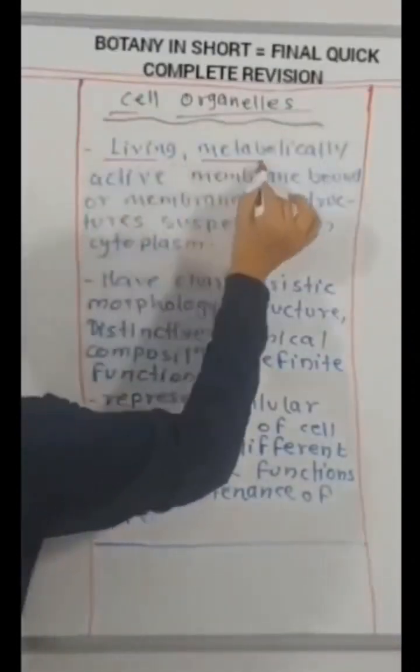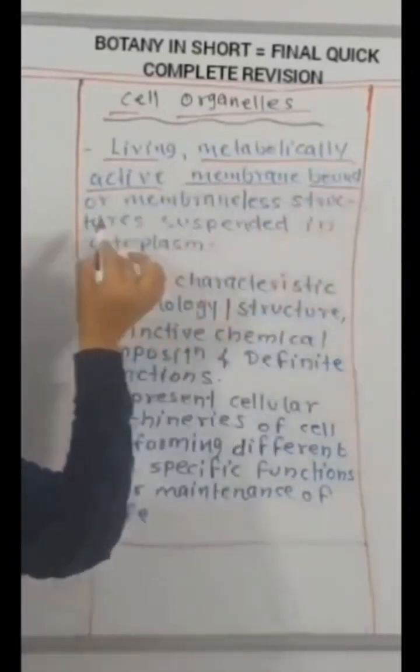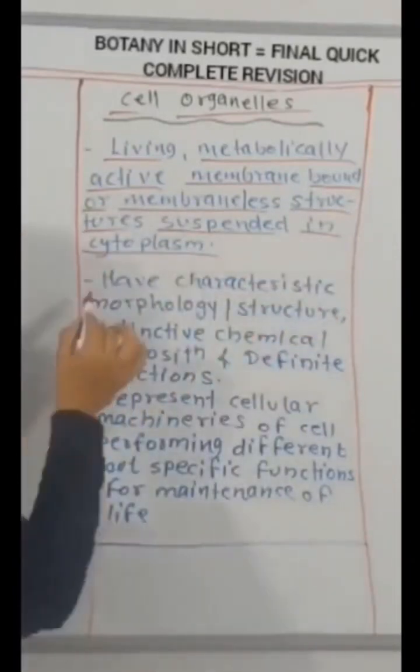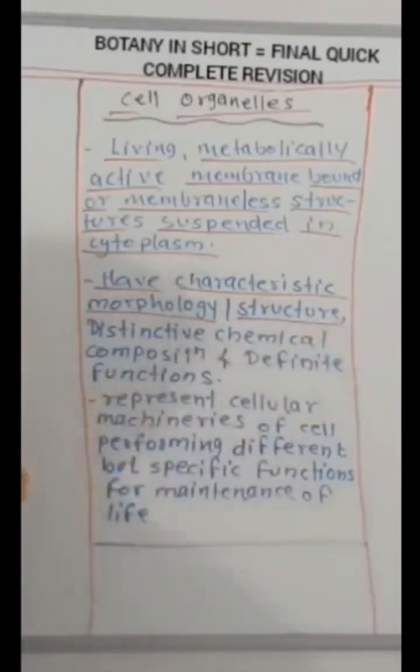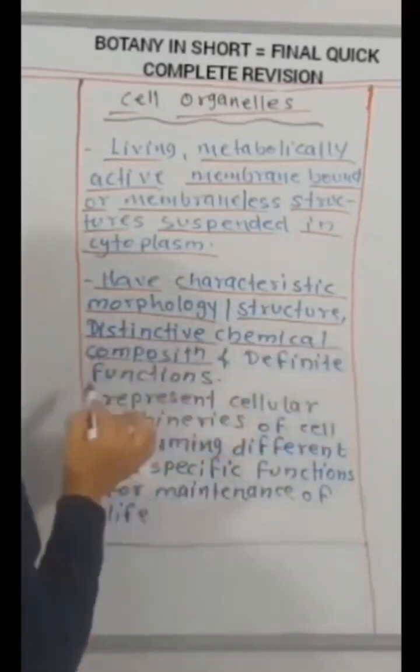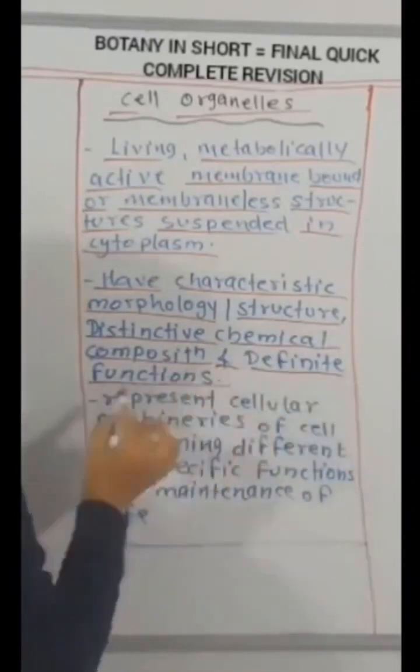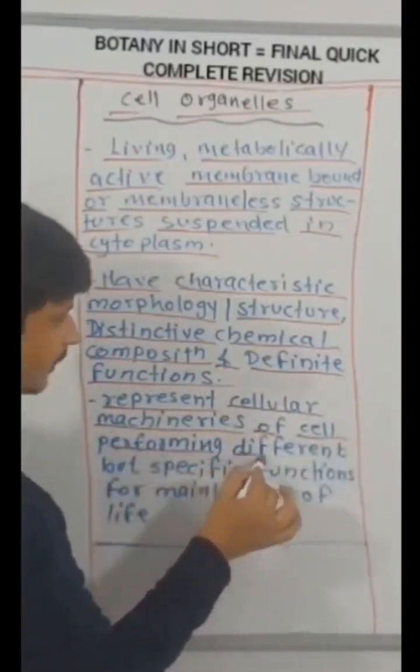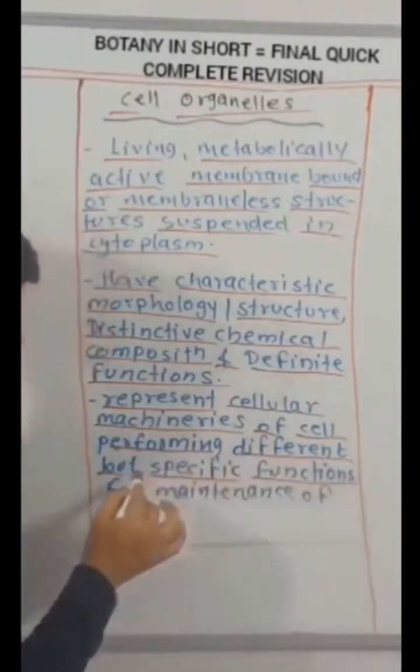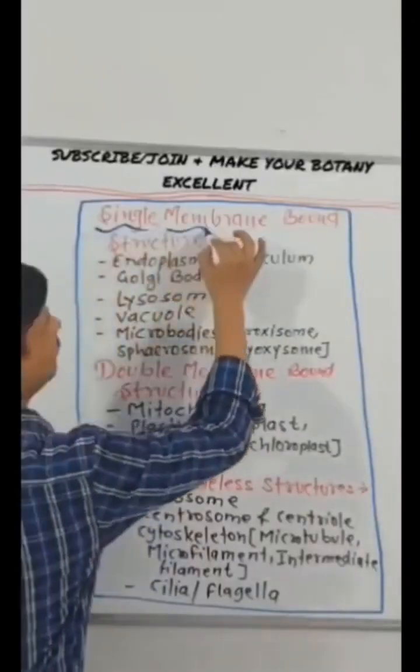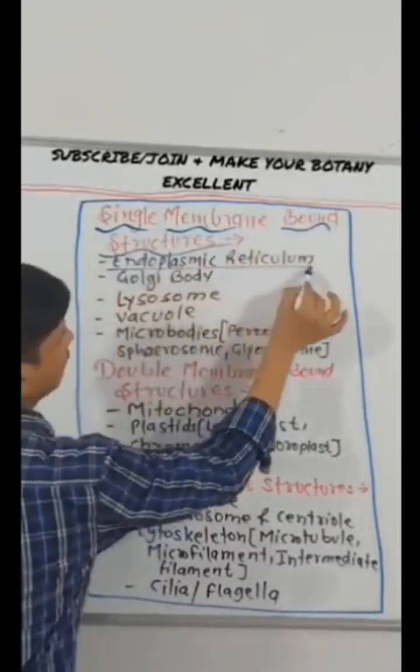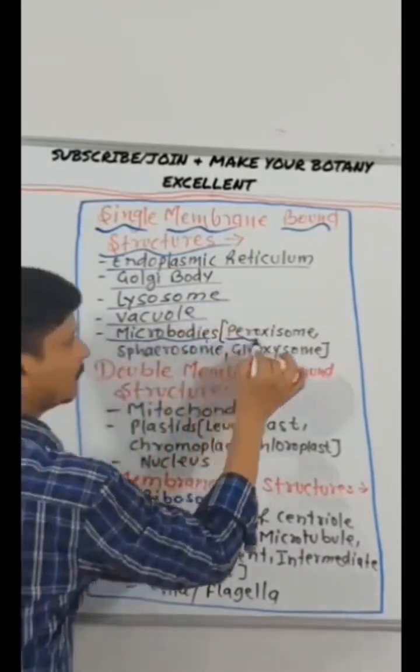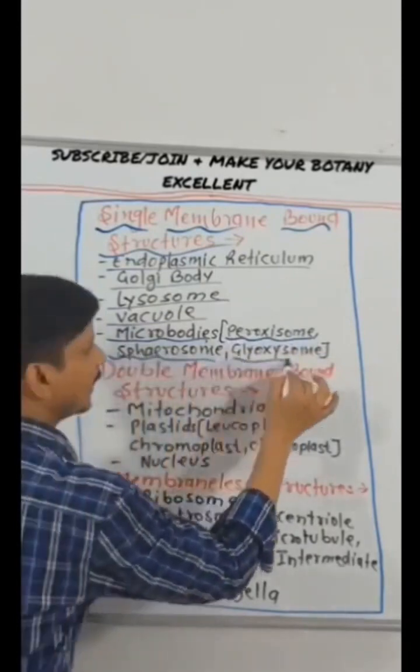Cell organelles. Living metabolically active membrane bound or membrane-less structures suspended in cytoplasm. Have characteristic morphology, structure, distinctive chemical composition and definite functions. Represent cellular machineries of cell performing different but specific functions for maintenance of life. Single membrane bound structures: endoplasmic reticulum, Golgi body, lysosome, vacuole. Microbodies on the name of peroxisome, spherosome, glyoxysome.